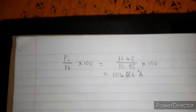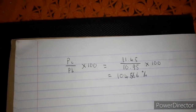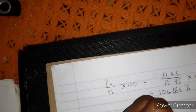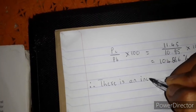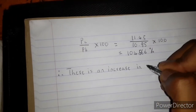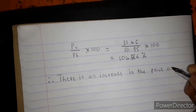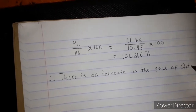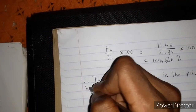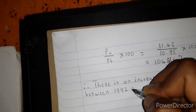When the answer is more than 100, it indicates that there is an increase. So there is an increase in the price of oats.